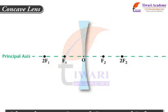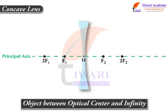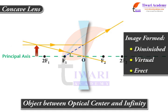Case B: Object is between optical centre O and infinity. A diminished, virtual and erect image is formed between principal focus F1 and optical centre O.